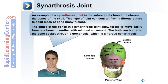An example of the synarthrosis joint is the suture joints, which are found between some bones of the skull. This type of joint can convert from a fibrous suture to a solid mass of bone, or bone fusion. The edges of the bone in a synarthrosis joint allow forces to move easily from one bone to another with minimal movement. The teeth are bound to the bone socket through a gomphosis, which is a fibrous synarthrosis.